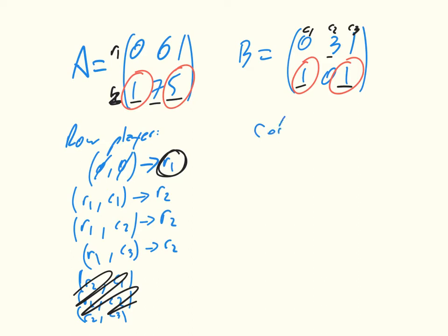And then for the column player, we're going to say that the first move is given by C2. And then if the first player plays R1, play C3. And then if the first player plays R2, then play C1.